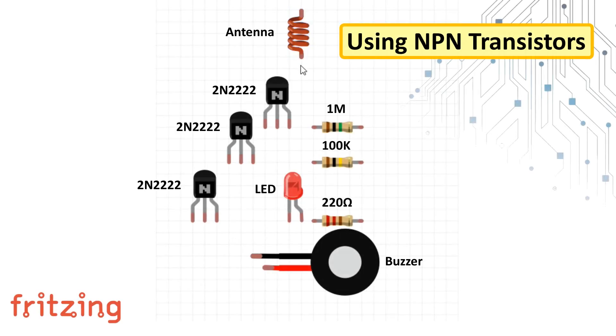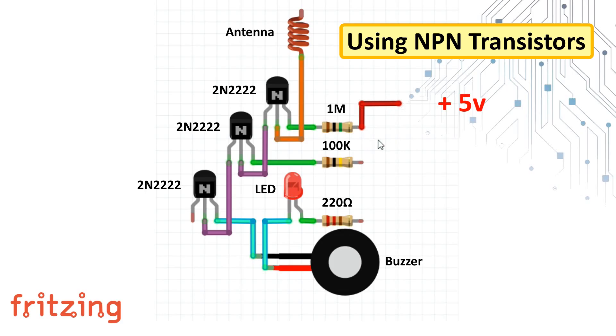Connect the antenna to the base of the first transistor, the emitter connects to the base of the second transistor and the same with the next one. Then connect the 1-meg resistor to the collector of the first transistor, 100k to the second and 220 ohm in series with the LED and the buzzer. Then connect all the resistors to the positive rail of the circuit board and finally ground the emitter of the third transistor.